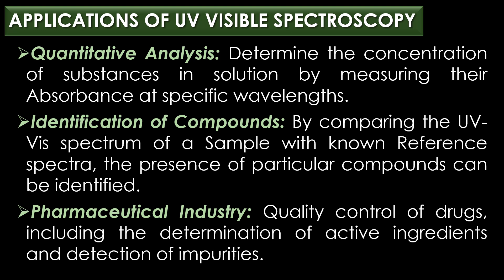The first application is quantitative analysis: UV-visible spectroscopy is used to determine the concentration of substances in solution by measuring their absorbance at specific wavelengths. The second application is identification of compounds: by comparing the UV-visible spectrum of a sample with known reference spectra, the presence of particular compounds such as aromatic or conjugated systems can be identified.